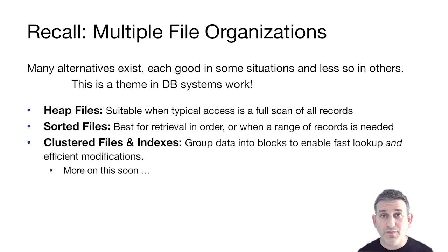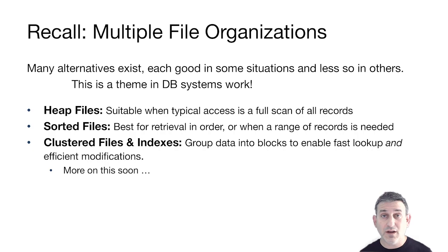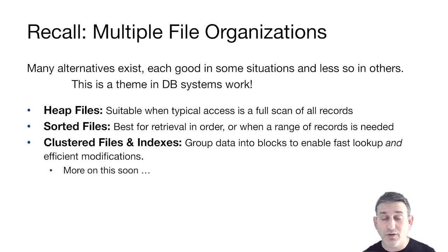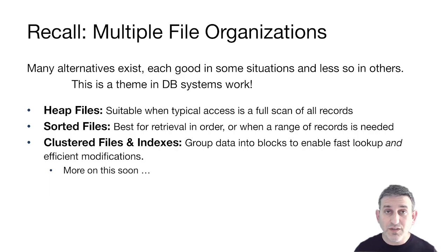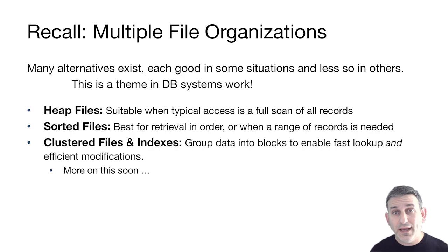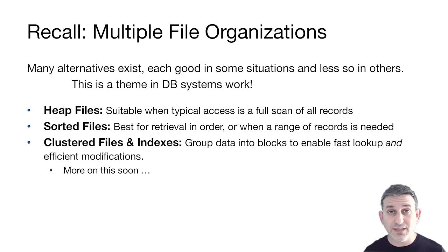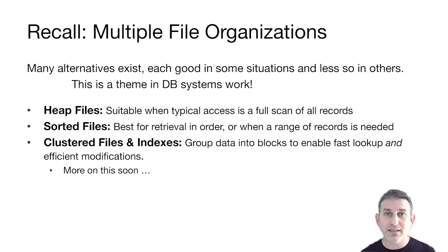There was more than one file organization — heap files were just one example. There are many alternatives used in database systems, each good in some situations and less good in others. This is a theme in database systems architecture: we often have trade-offs between multiple decisions, so we implement a variety of techniques and choose among them intelligently. Heap files are suitable when the access pattern is a full scan. Sorted files are best for retrieval in a particular order or when a range of records is needed. We'll also look at clustered files and indexes, which group data into blocks to enable fast lookups and efficient modifications.